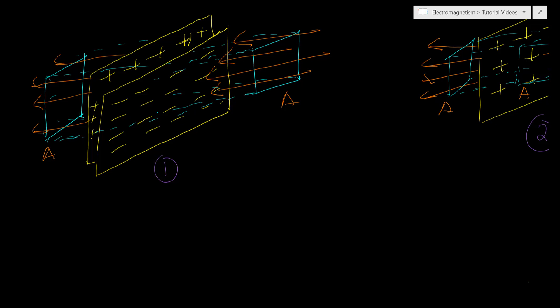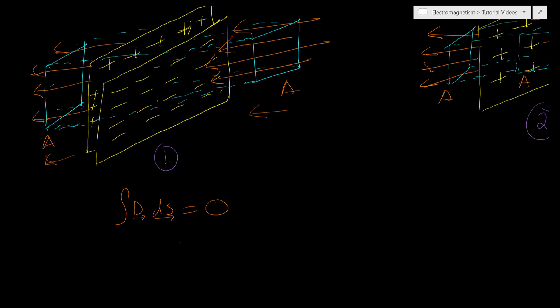From our field lines, on the negative side we see the field lines going this way, and on the positive side the field lines are going this way. So if we solve this equation, the electric flux density through the surface is going to be 0, because the same amount going in is going out. Therefore, the electric field on the outside is going to be equal to 0.